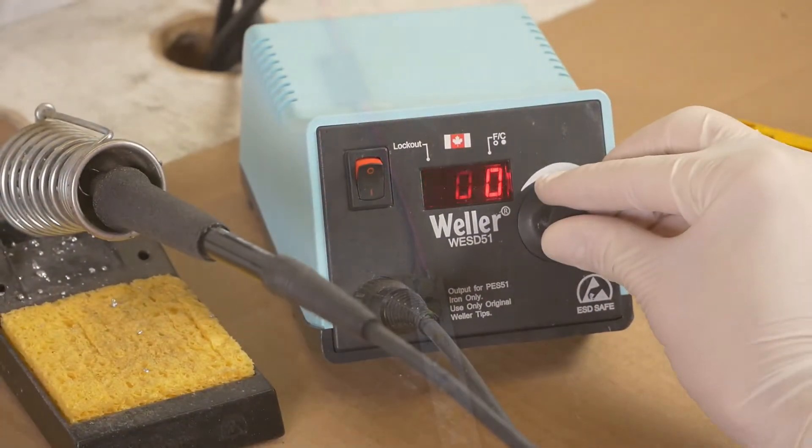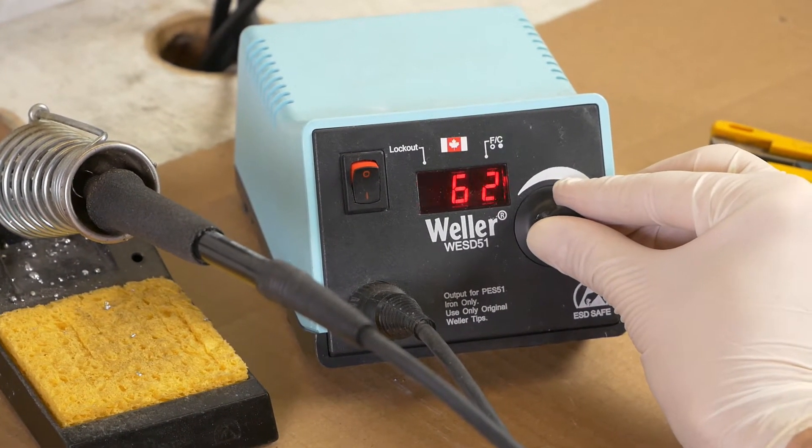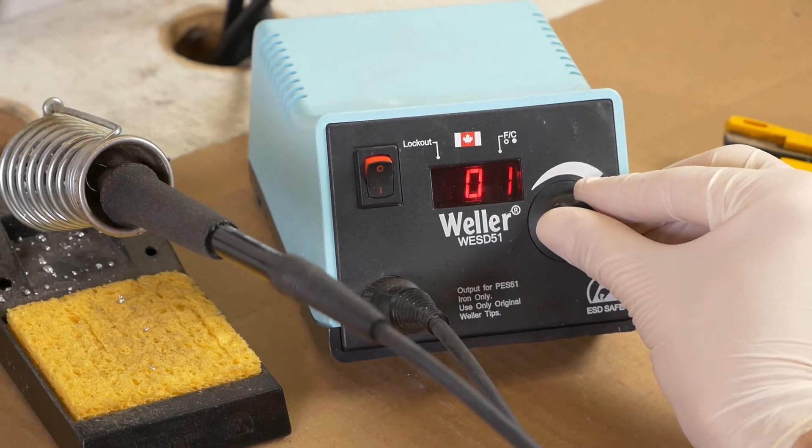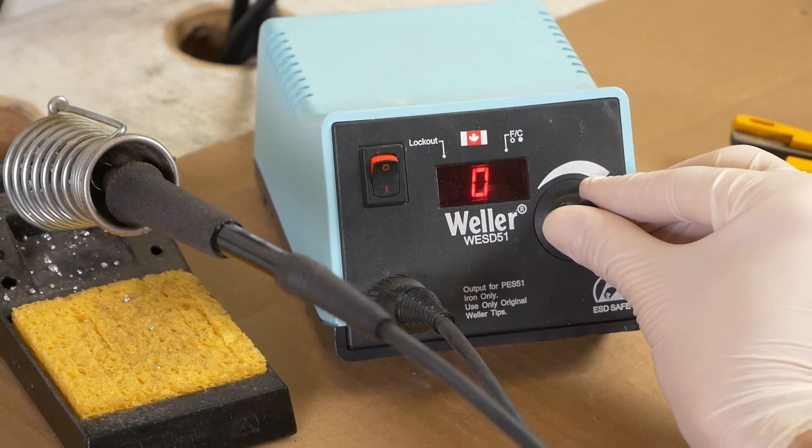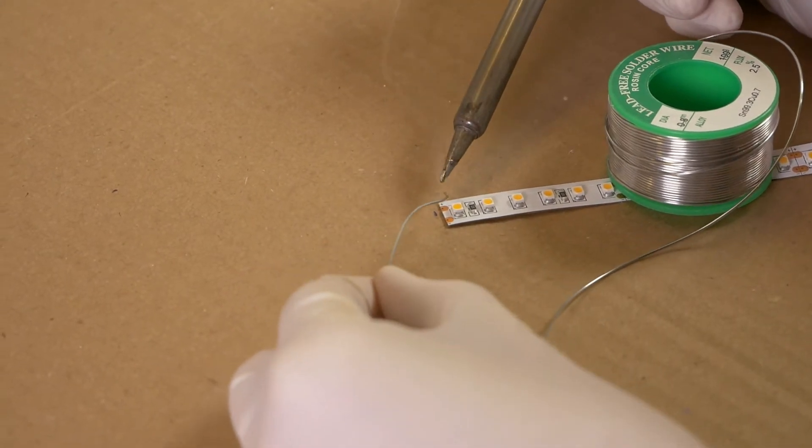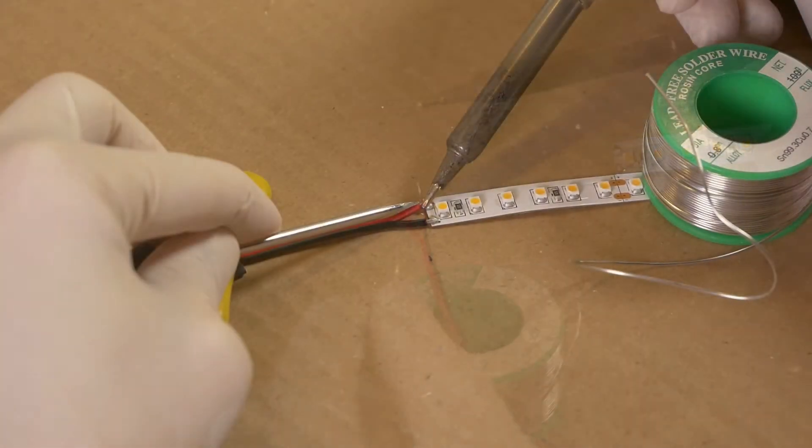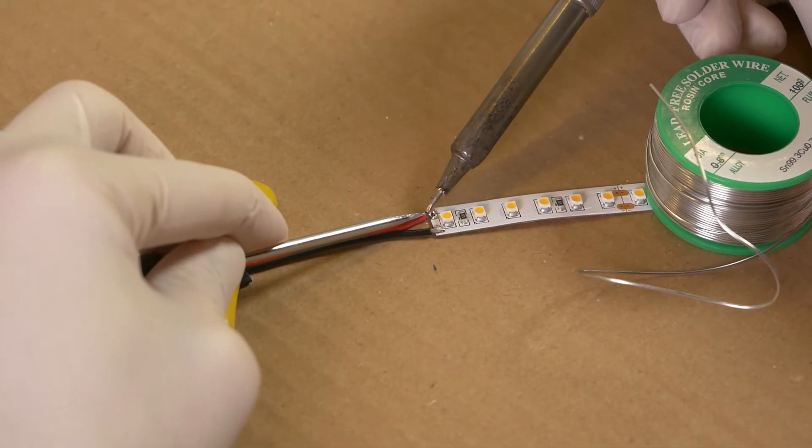For lead-free solder, we do exactly the same thing, but set the iron to 600 degrees Fahrenheit, or around 315 degrees Celsius, as it has a higher melting point. Again, apply a bit to the tip of the iron and tin the contact of the LED strip. Also tin the wire. Remelt the contact, putting the wire into the melted solder and let it fuse.